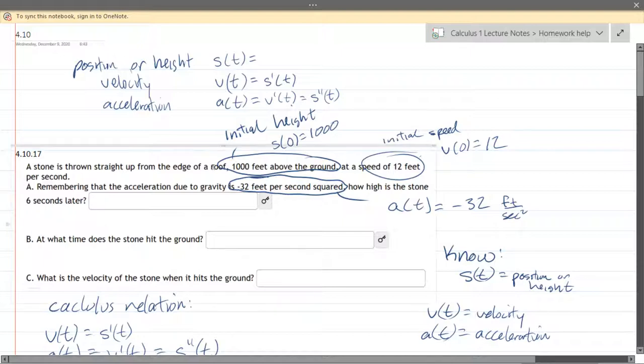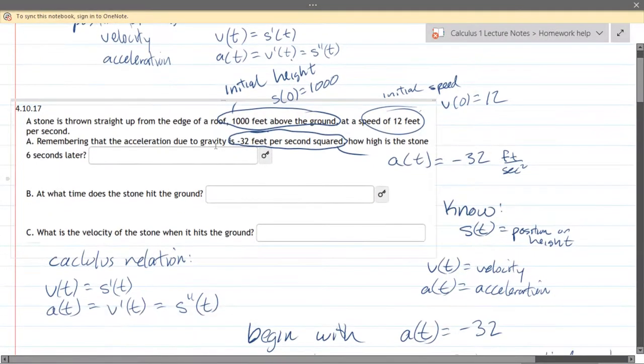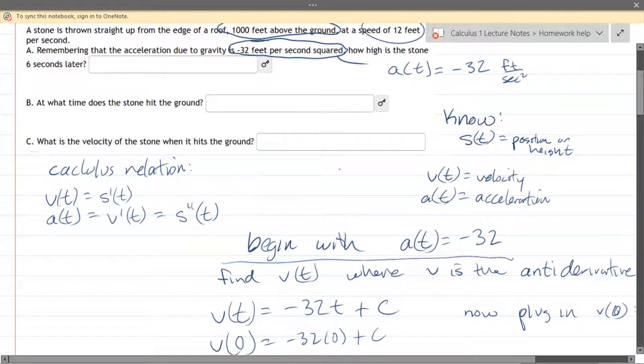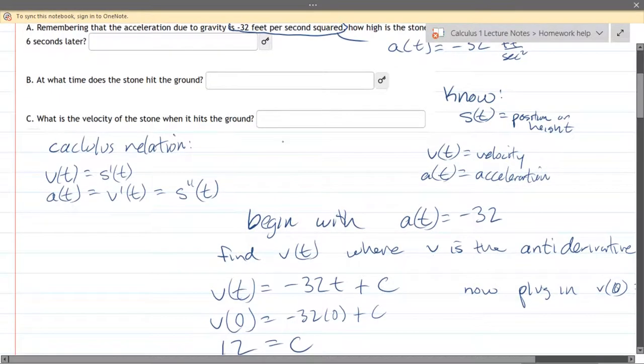So we're going to take some anti-derivatives here so we're starting with the acceleration function. We begin with the acceleration right here is negative 32. We're going to find the anti-derivative so we have variables t not x so the anti-derivative is negative 32 t plus a constant.